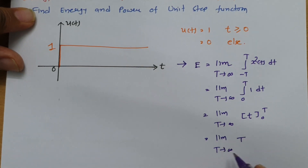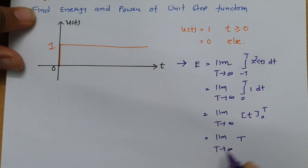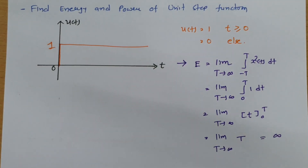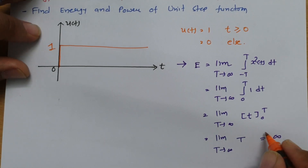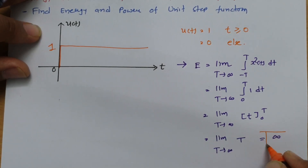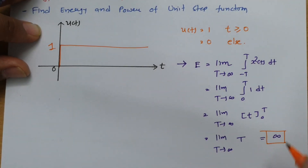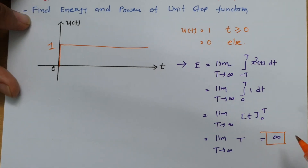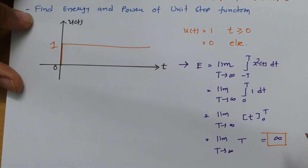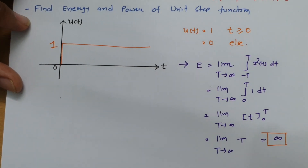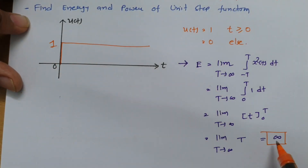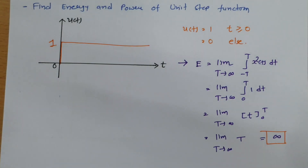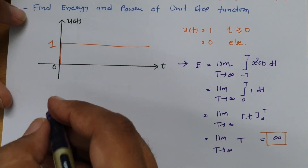Placing the limit, we get the limit as T tends to infinity of T, which equals infinity. Since the energy is infinite, this is not an energy signal, so we must calculate the power. The energy of the unit step function is infinite.